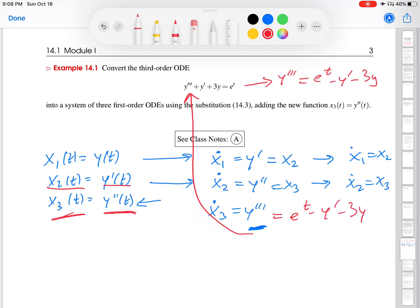Okay, and at this point I've been doing everything in terms of x's, so I would like to replace these things with x's. Well, so y prime over here on the left is x2. So this is e to the t minus x2. Y over here on the left is x1. So this is minus 3x1.